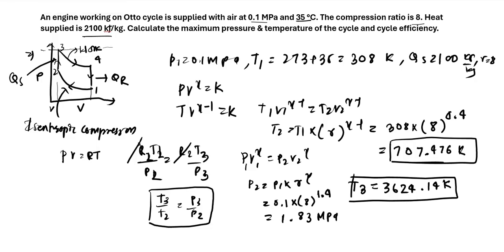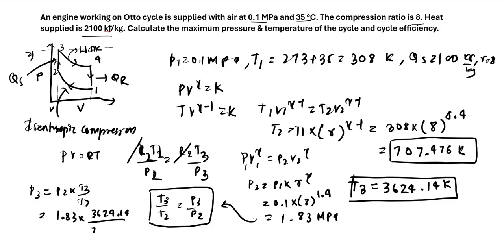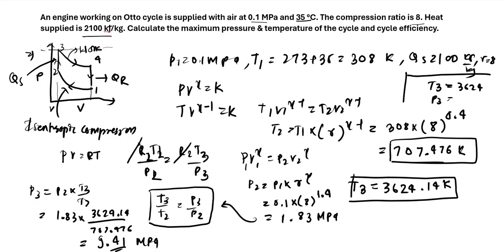With P2 known, we apply the constant volume ideal gas relation T3/T2 = P3/P2, so P3 = P2 × (T3/T2) = 1.83 × (3624.14 / 704.476), giving P3 = 9.41 MPa. So the maximum temperature is T3 = 3624 K and the maximum pressure is P3 = 9.45 MPa.